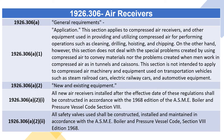1926.305(d)(1)(v): Repair or replacement parts shall be examined for possible defects. 1926.305(d)(1)(vi): Jacks which are out of order shall be tagged accordingly and shall not be used until repairs are made. 1926.306 Air Receivers. 1926.306(a) General Requirements. 1926.306(a)(1) Application: This section applies to compressed air receivers and other equipment used in providing and utilizing compressed air for performing operations such as cleaning, drilling, hoisting, and shipping. This section does not deal with compressed air used to convey materials, or with men working in compressed air as in tunnels and caissons, nor does it apply to transportation vehicles.